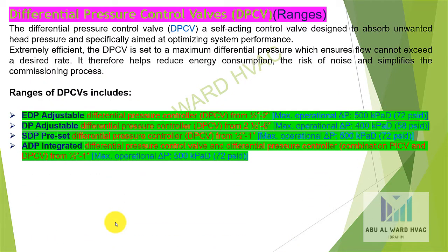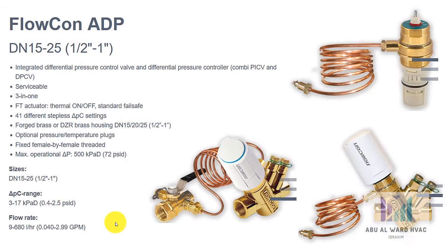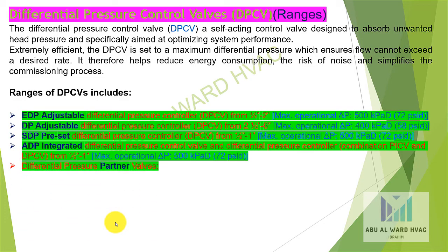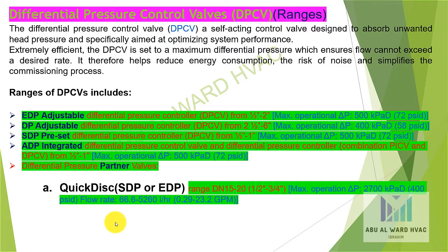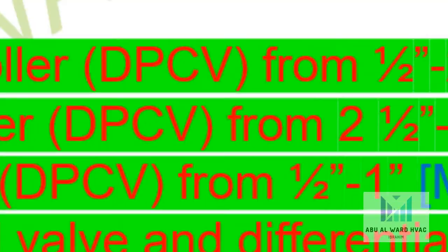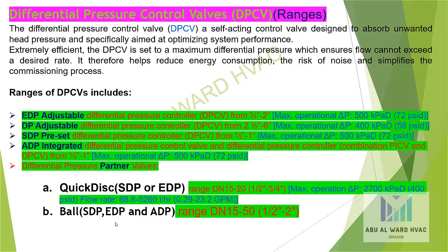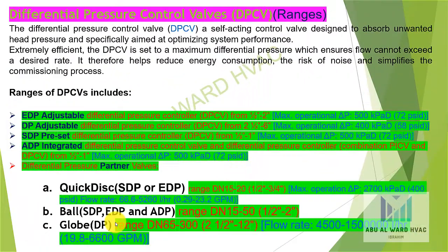ADP — integrated differential pressure control valve combining DPCV and dynamic balancing valve, half to one inch, Delta P of 500 kPa. Differential pressure partner valves include: Quick disk (SDP or ADP), Ball (SDP, ADP, EDP, and ADP), and Globe (DP).